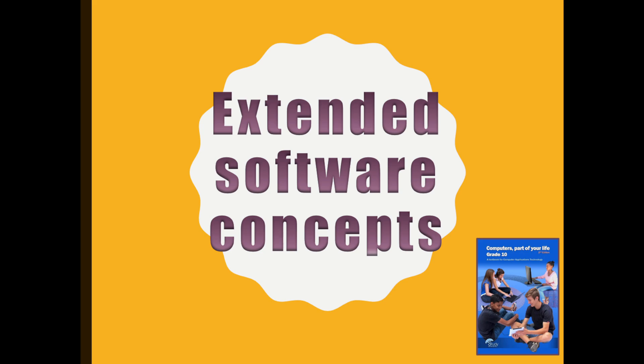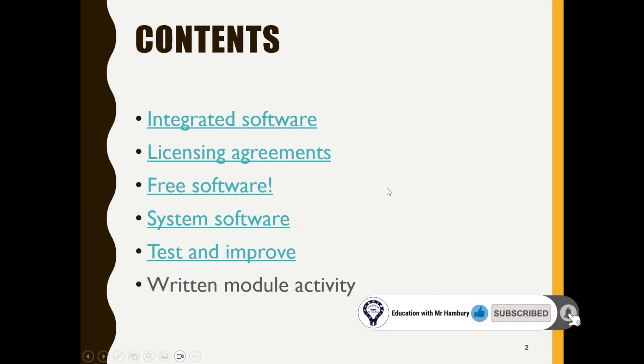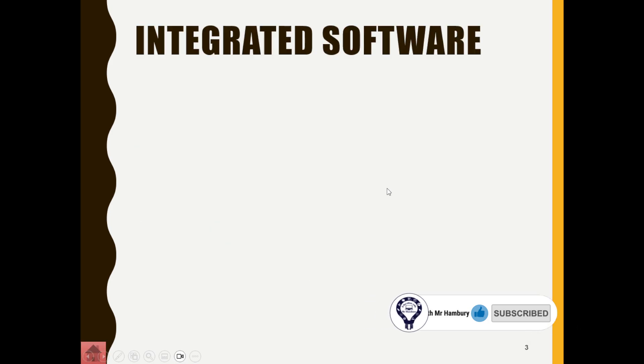As we continue learning more about computers, today we're looking at extending software concepts — this is lesson number eight. We're going to be looking at terms like integrated software, licensing agreements, free software, and system software. When we talk about software, we are talking about programs that perform a specific function — this could be applications like WhatsApp, Facebook, messaging services, anything like that.